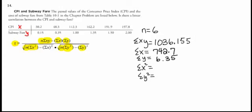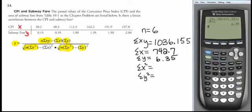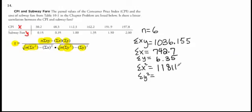Summation x squared, I have to square each x and add it together. So I'm going to take 30.2, square it. I'm going to add 48.3 squared, 112.3 squared, adding these numbers together, 162.2 squared, 191.9 squared, 197.8 squared. And I get 118,115.51.